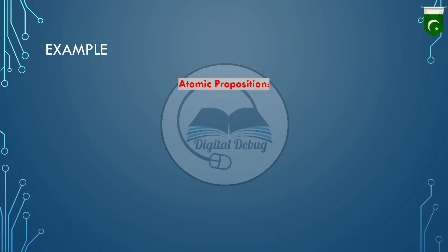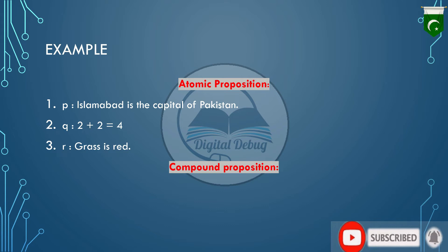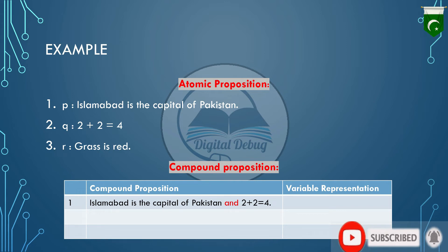Let's take some examples. We have atomic propositions represented with variables P, Q, R — totally up to your choice, you can use any variable. Now we are going to create a compound proposition. For example: 'Islamabad is the capital of Pakistan AND 2 plus 2 is equal to 4.' We combined two atomic propositions with the logical operator 'AND'.